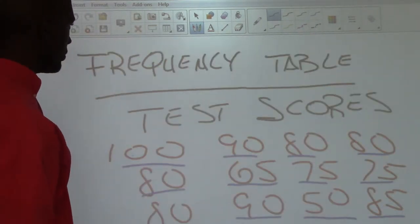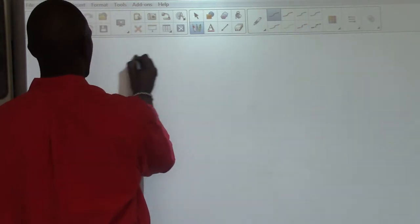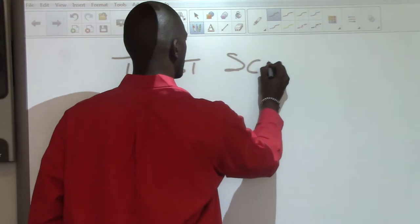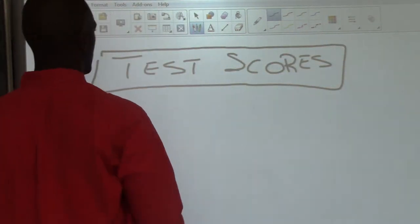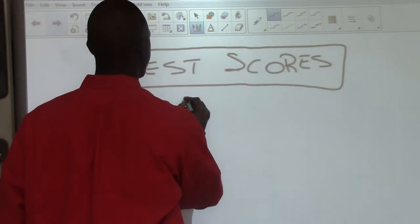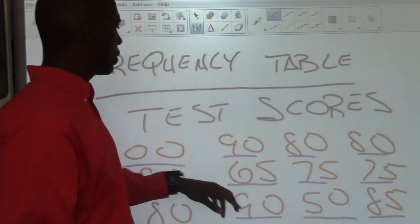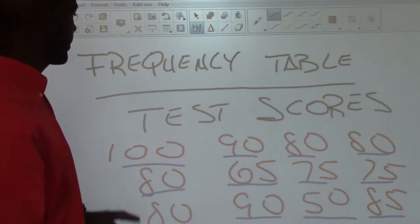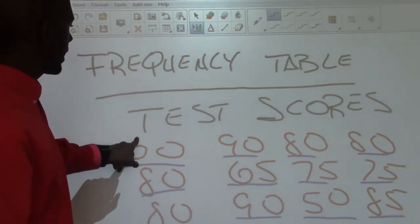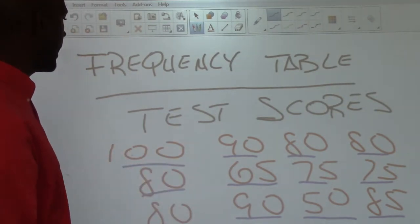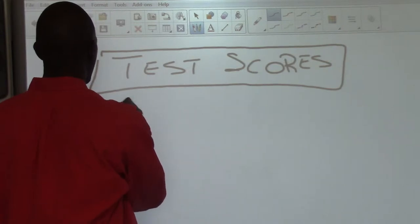Using the test scores, we're going to create a frequency table called 'Test Scores.' We'll represent each test score as data on the table, starting from the highest score down to the lowest. So we have: 100, 90, 85, 80, 75, 65, and 50.